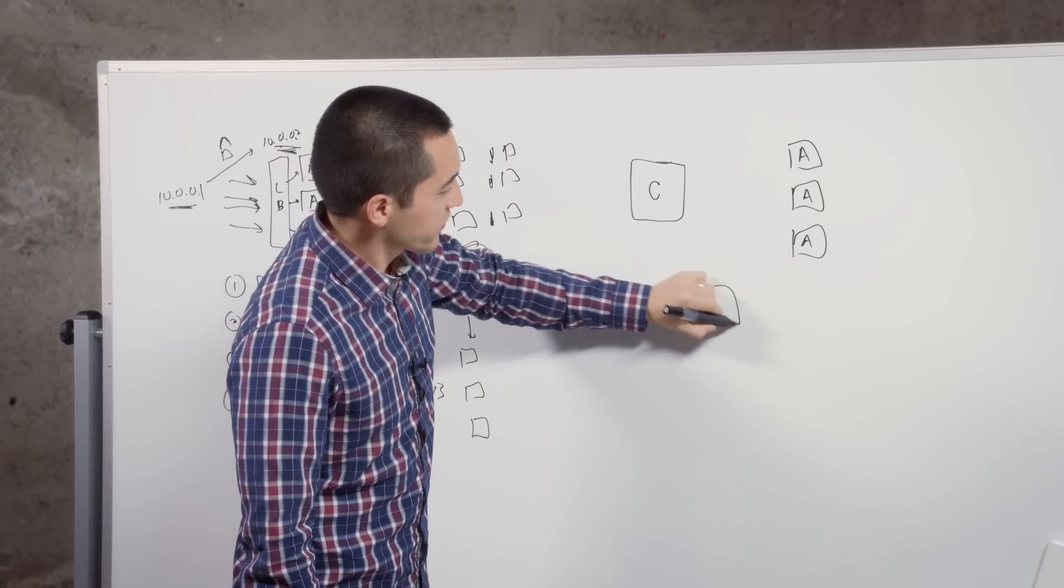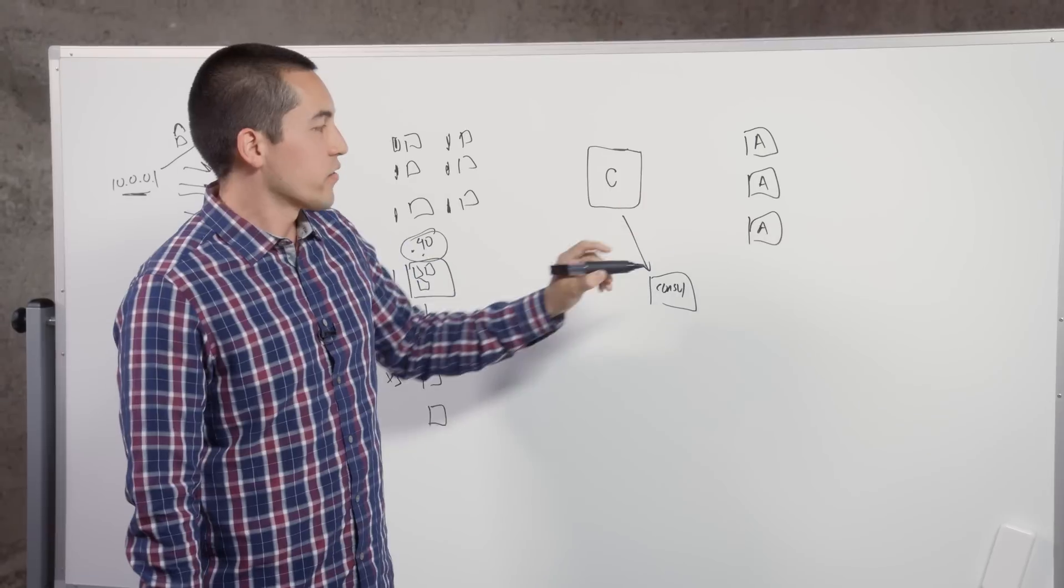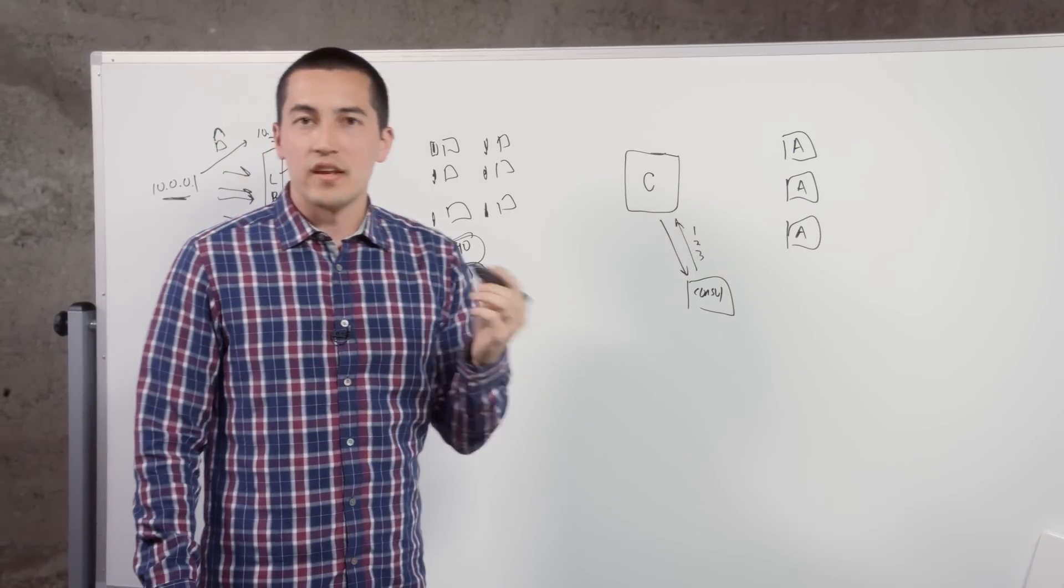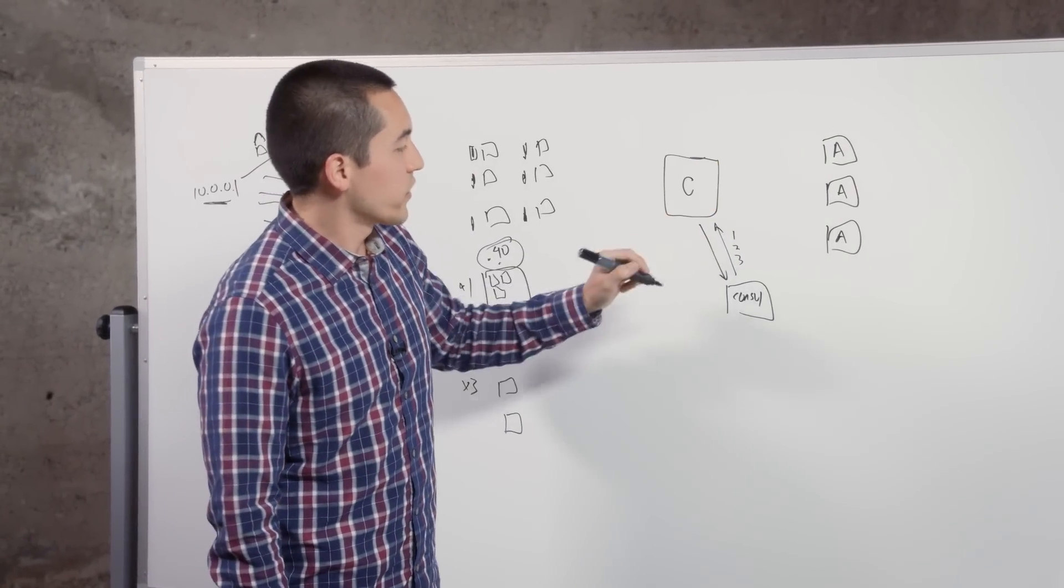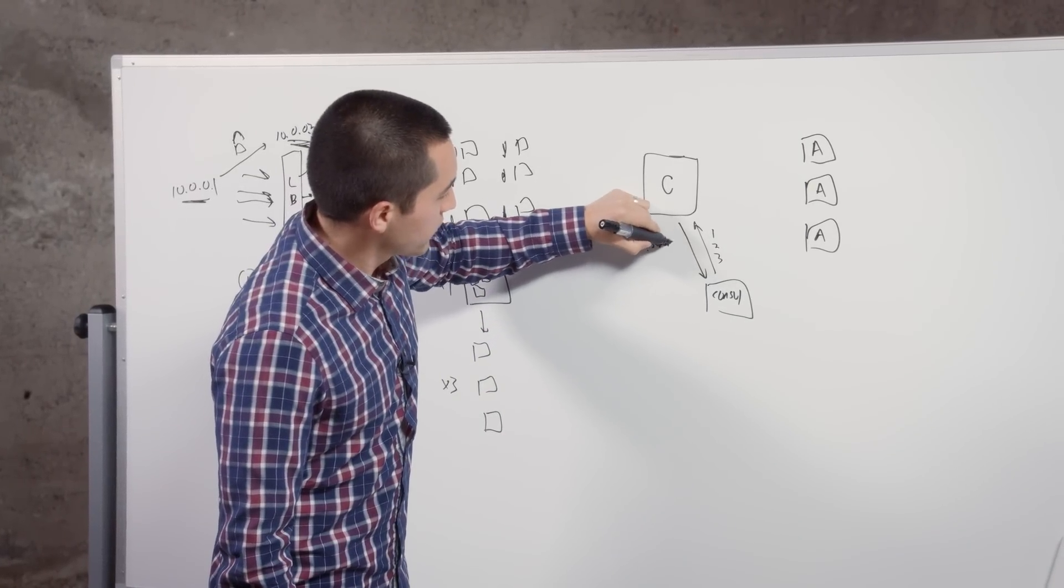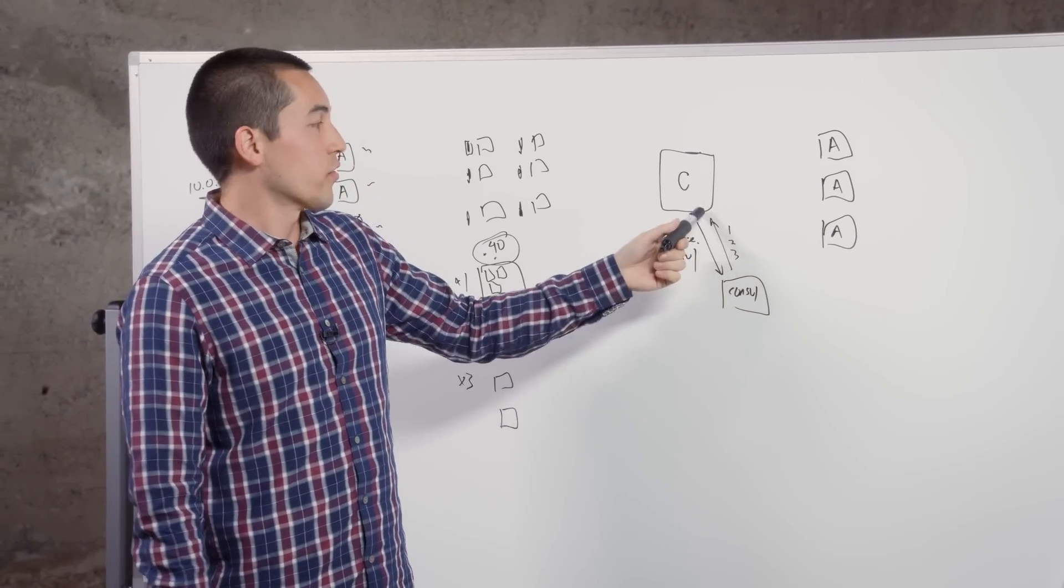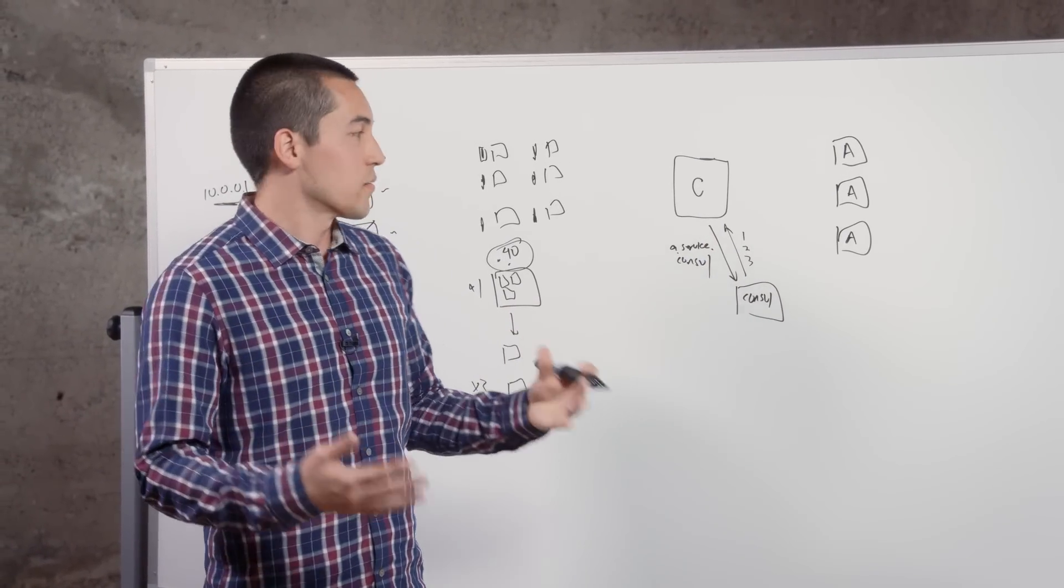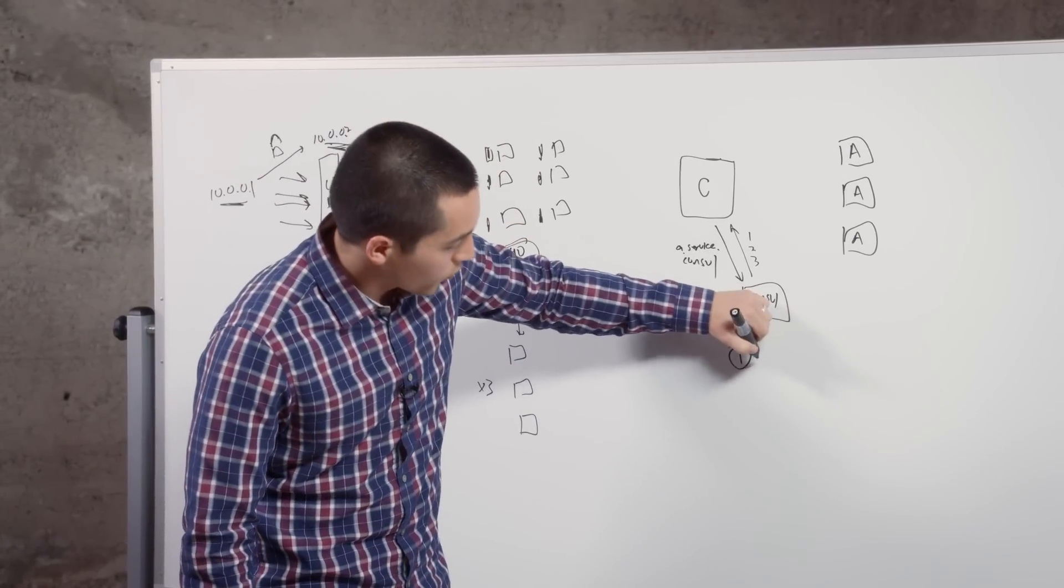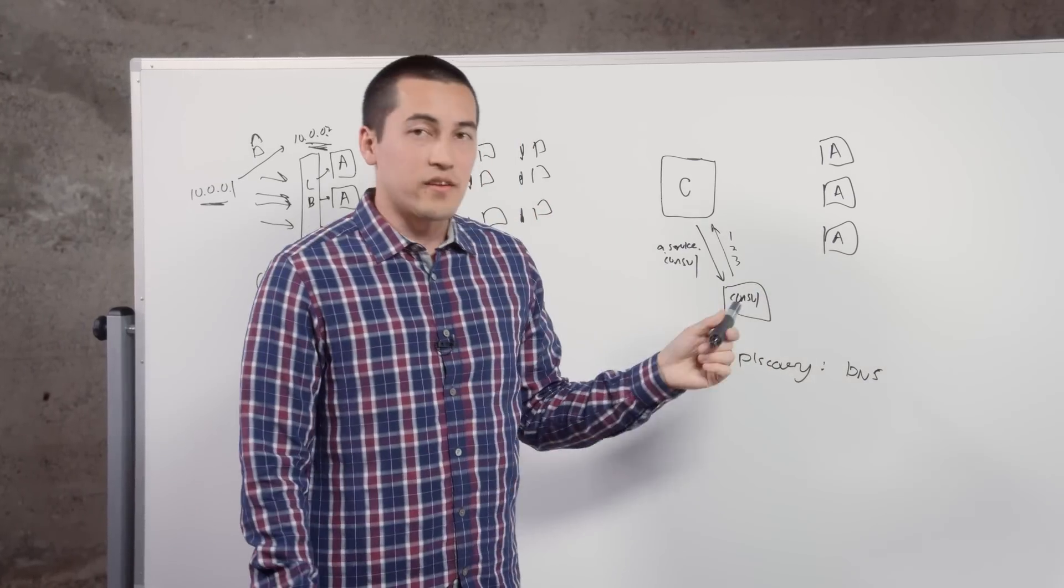When it wants to make a request, what it does instead is ask Consul for the addresses for A, and it responds with all three addresses here. It does that via DNS. What it would ask for here instead is actually A.service.consul. After it does that DNS request, it gets all three, and so we lean on DNS as the method for service discovery. So discovery is now DNS.